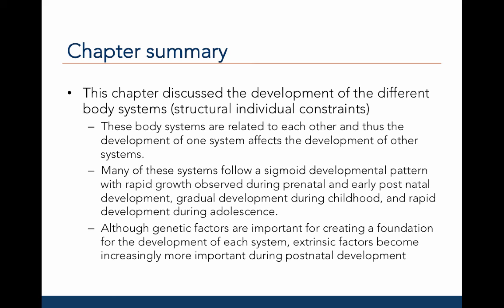Let's recap what we've discussed so far in this chapter. We have discussed the development of the different body systems, including the skeletal, muscular, adipose, endocrine, and nervous systems. These are all structural, individual constraints that can affect the timing and quality of movements evident across the lifespan. These body systems are related to each other, and thus the development of one system affects the development of others. Many of these systems follow a sigmoidal developmental pattern with rapid growth observed during prenatal and early postnatal development, followed by gradual development during childhood, and then another period of rapid development during adolescence. Lastly, although genetic factors are important for creating a foundation for the development of each system early in development, extrinsic factors like diet, exercise, and exposure to good and bad environmental stimuli become more important during later development.